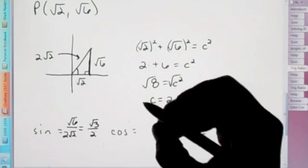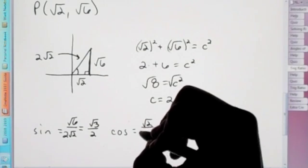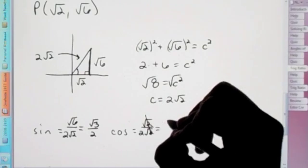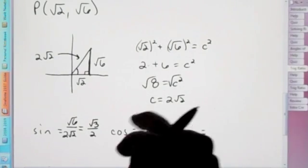Next, we have cosine, which is adjacent over hypotenuse. In which, in this case, they just cross out. So we're left with 1 half.